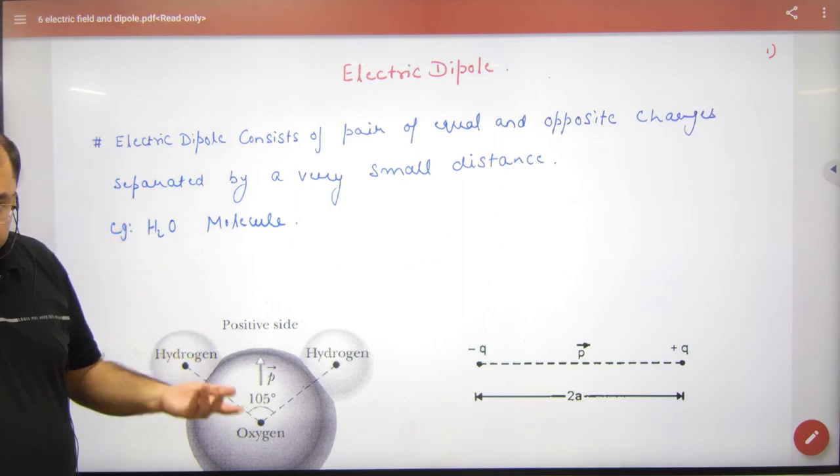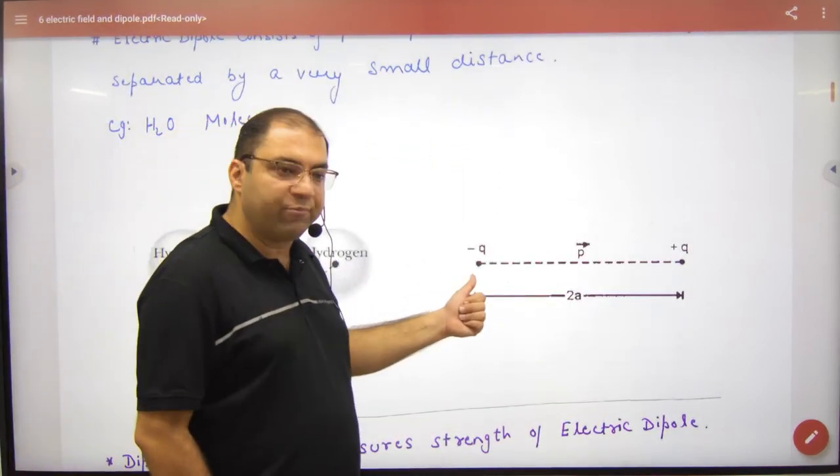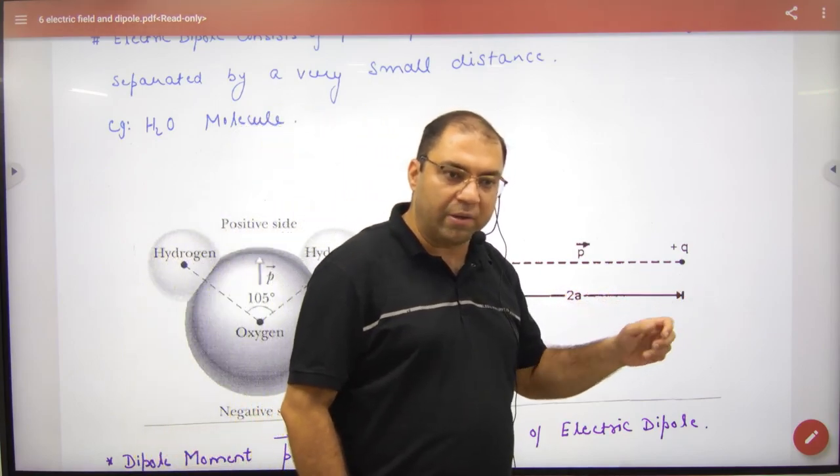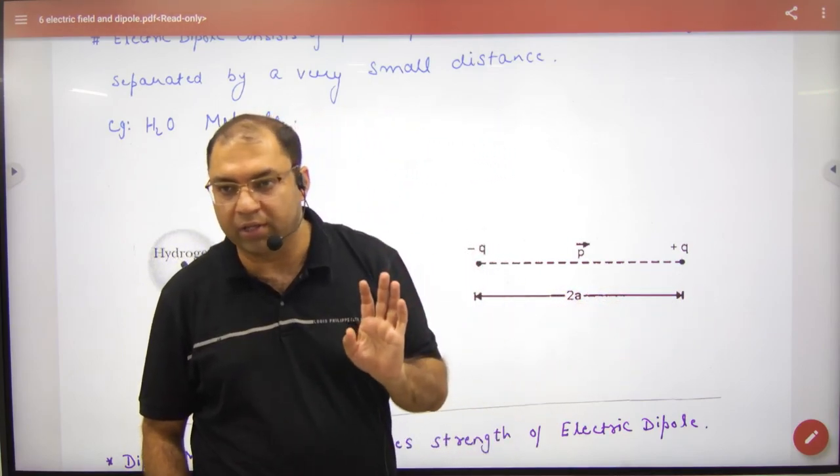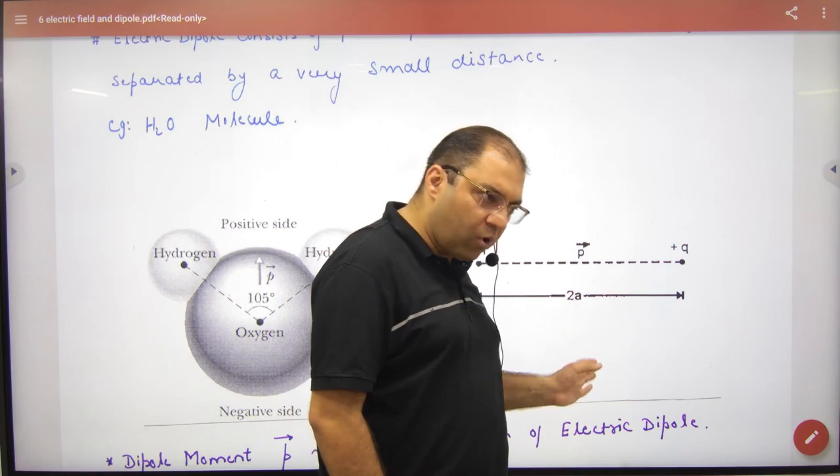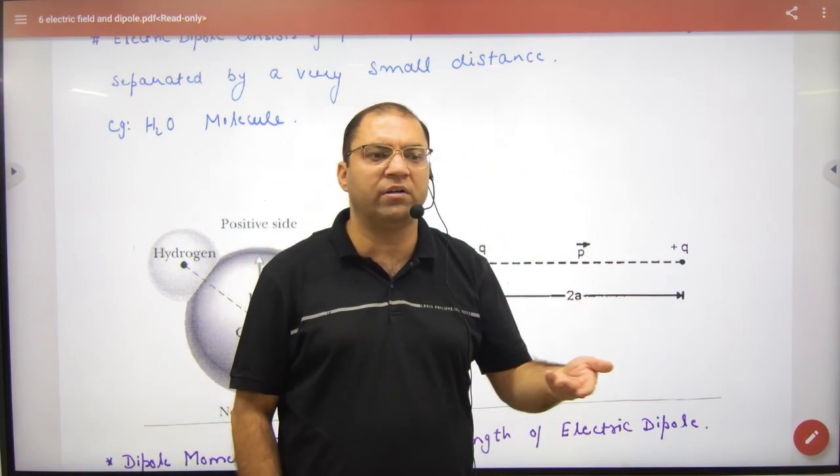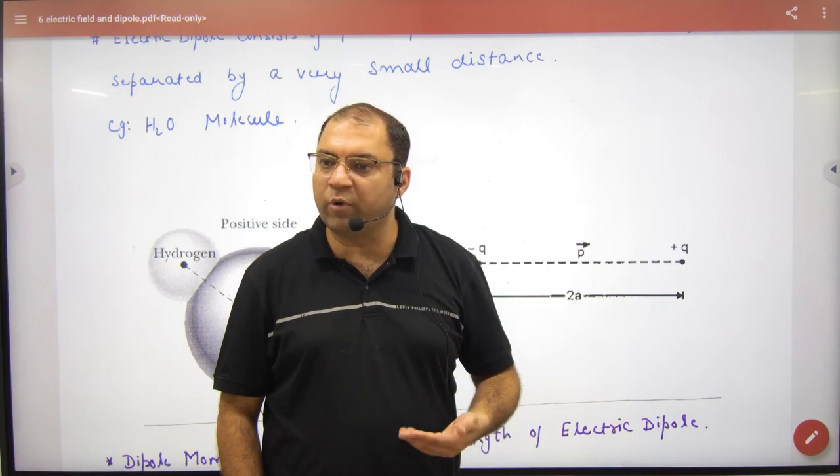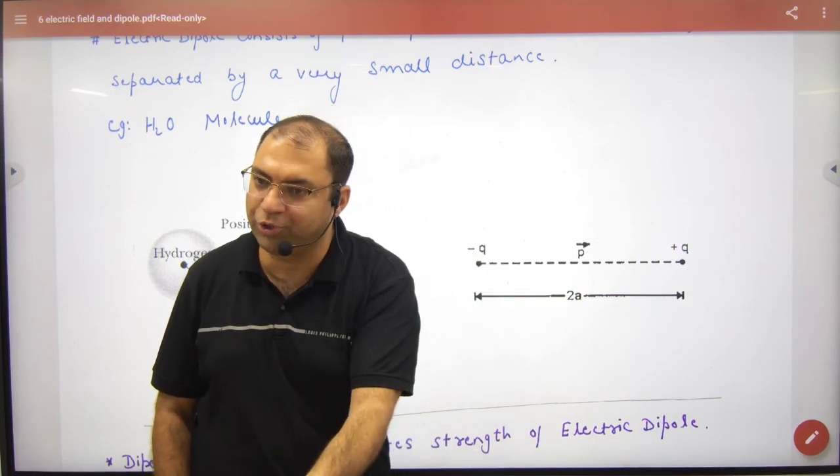Like H2O molecule I have given an example. This is an electric dipole, minus Q and Q separated by a small distance 2A. This small distance 2A - like 2A value is 0.001 meter, so A value is 0.001 meter by 2.